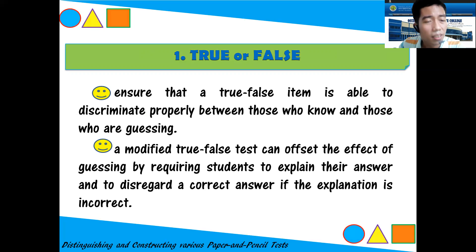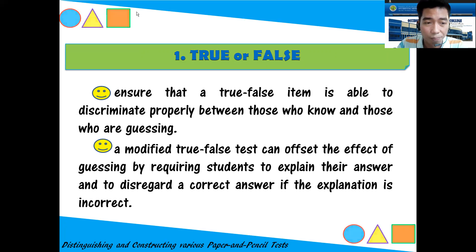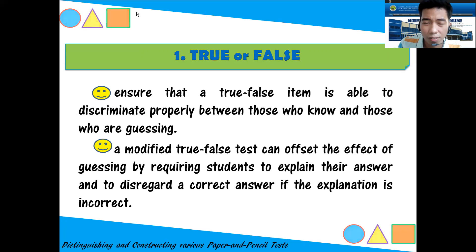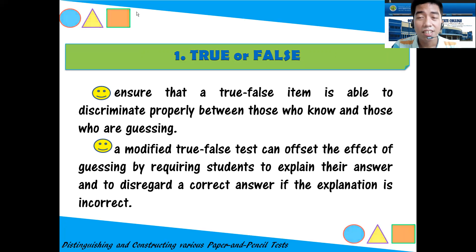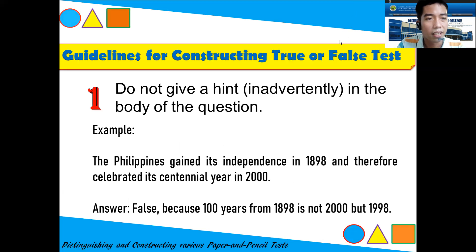A modified true-or-false test can offset the effect of guessing by requiring students to explain their answer and to disregard the correct answer if the explanation is incorrect. You may have experienced answering modified true-or-false tests where you find the word or phrase that makes the sentence false, and if it is true, you simply write 'true.' So, what are the guidelines when constructing true-or-false tests?